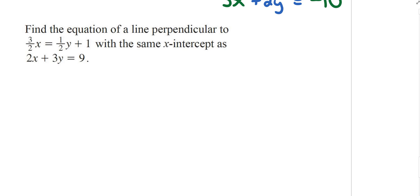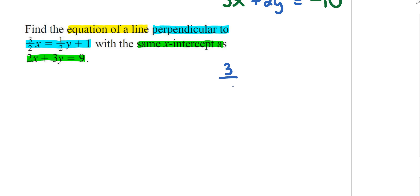Question number 11 is another similar problem: find the equation of a line perpendicular to a given line with the same x-intercept as another equation. First, find the slope — the line is perpendicular to 3 over 2x equals 1 half y plus 1.